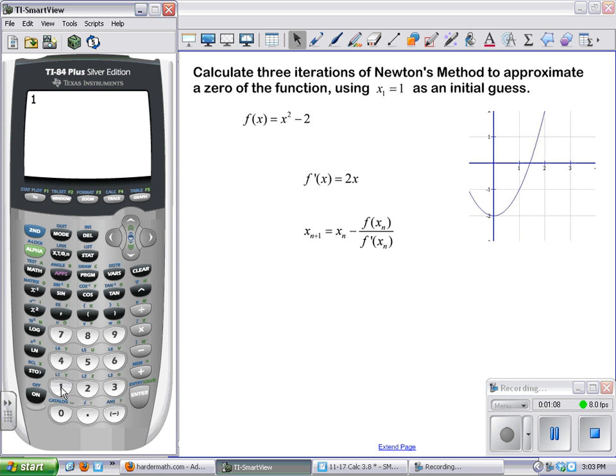If you just type in your initial guess of 1 and hit enter, that saves that, so to speak, as the previous answer in the calculator. And now to get our next guess, what we want to do is we want to take that answer and from that answer we want to subtract the quotient of those two functions.